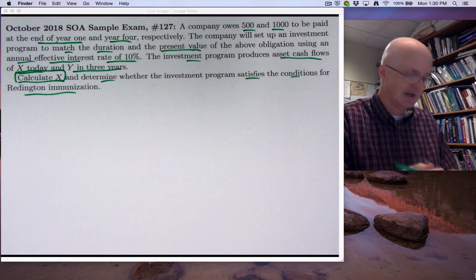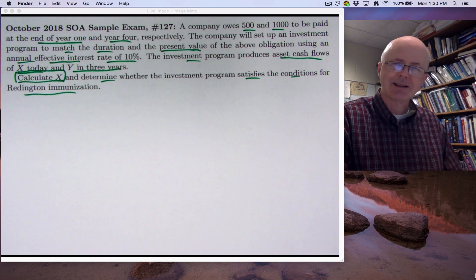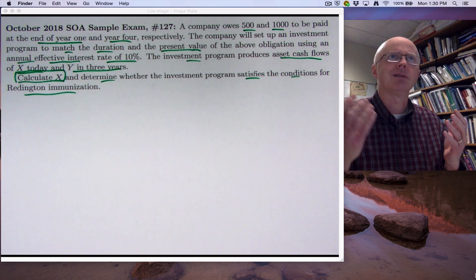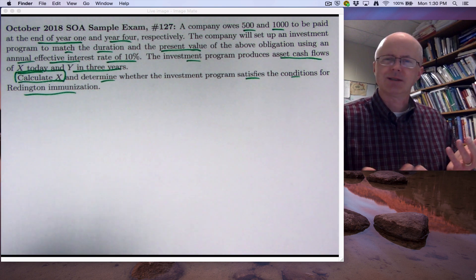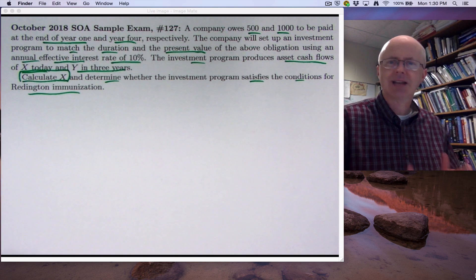Two things again, calculate X and then also determine whether the investment program satisfies the conditions for Reddington immunization. And again, I'm going to tell you the answer ahead of time here is that it will not, which will bring up then a question of, well, why not?